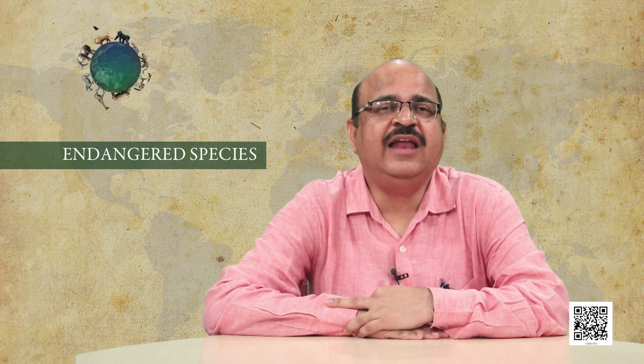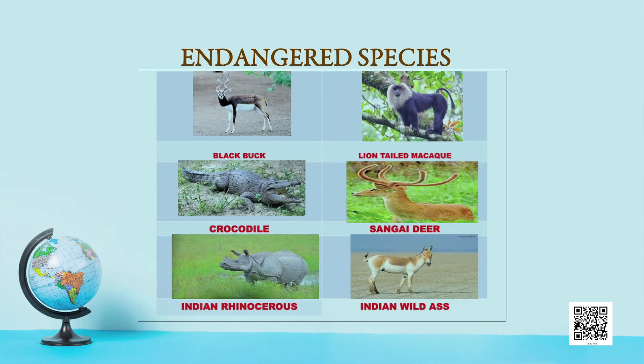Endangered species: the prefix 'en' added to 'danger' means 'within danger.' Endangered species are those organisms at risk of becoming extinct because they are few in numbers, threatened by a changing environment, or predation. Deforestation may also cause lack of food or water. They face a very high risk of extinction in the wild. Examples include the black buck, crocodile, Indian rhino, lion-tailed macaque, Sangai deer, and Indian wild ass.